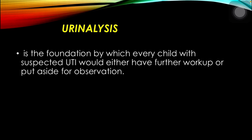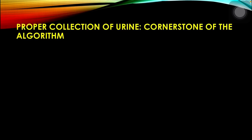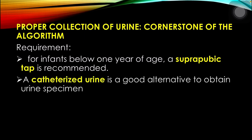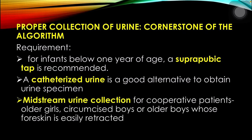Urinalysis is the foundation by which every child with suspected UTI would either have further workup or be put aside for observation. Proper collection of urine is the cornerstone of the algorithm. For infants below 1 year of age, a suprapubic tap is recommended, with catheterized urine as a good alternative. Midstream urine collection is appropriate for cooperative patients such as older girls, circumcised boys, or older boys whose foreskin is easily retracted.